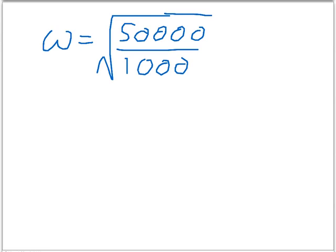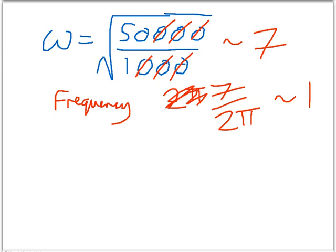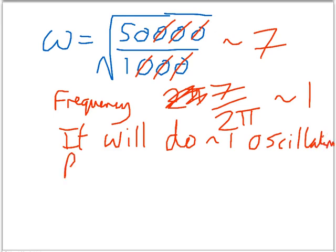So what's that? Let's cross out some zeros. So it's root 50 over 1. Now that's more than root 10, which is 3, and less than root 100, which is 10. So it's probably something like 7, something like that, close enough. So we've got an angular frequency of 7 radians per second. How many actual oscillations is that per second? An oscillation is 2 pi radians. So that gives a frequency of 7 over 2 pi. Pi is about 3, 2 pi is about 6, which is close to 7, so that's about 1. So it's going to oscillate about 1 oscillation per second.